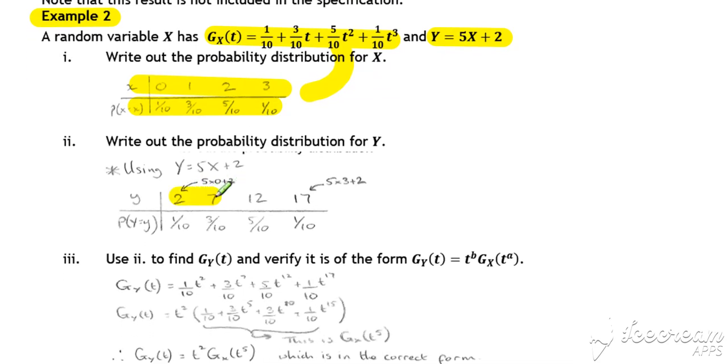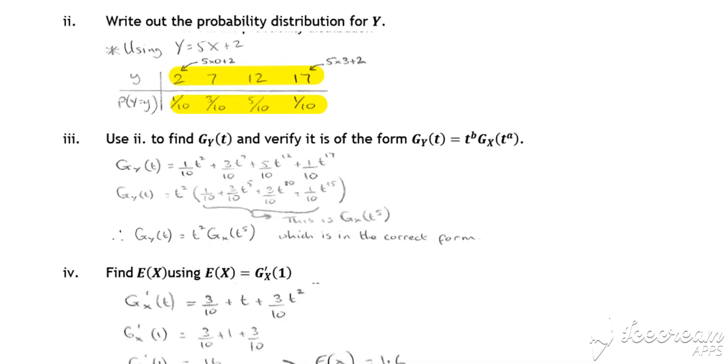So we get our Y values by multiplying X by 5 and adding 2, and the same set of probabilities. And then if we now work out the probability generating function for Y from our probability distribution...